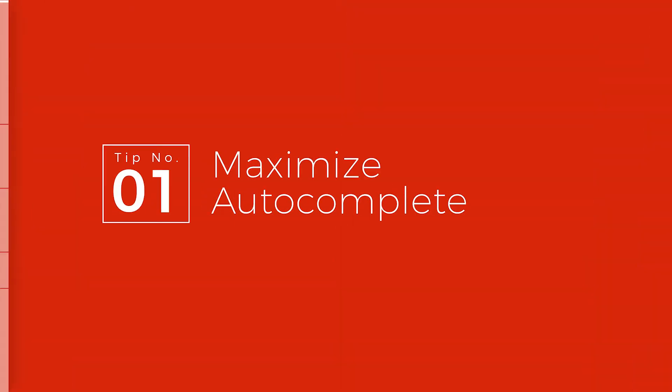Number one: maximize autocomplete. If you're not familiar with autocomplete, when you start typing in the search bar, you may notice Google starts to read your mind, or at least tries to. What Google is doing is populating the bar with possible terms you can use that are related to the terms you're typing in. And this is a source of information that will serve your research strategy because it's based on Google's user-driven data.